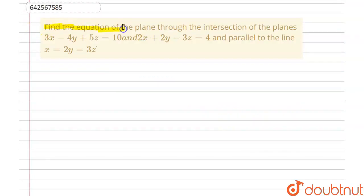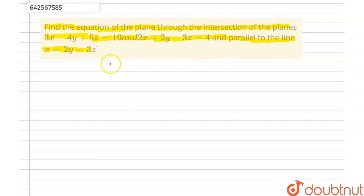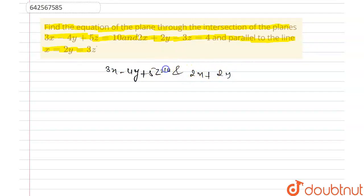The question says: find the equation of the plane through the intersection of the planes 3x minus 4y plus 5z equals to 10 and 2x plus 2y minus 3z equals to 4, and parallel to the line x equals to 2y equals to 3z.